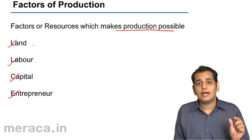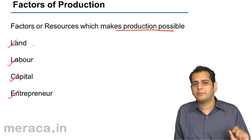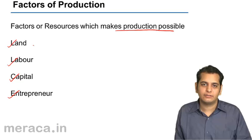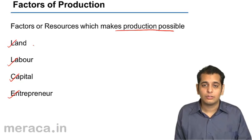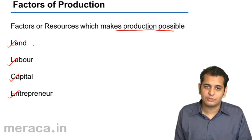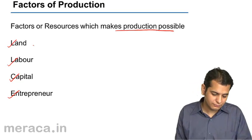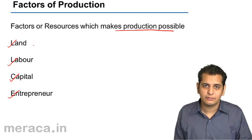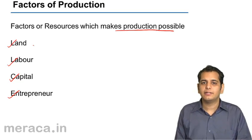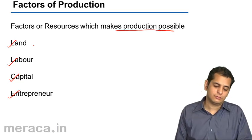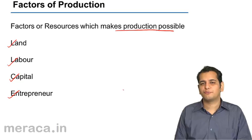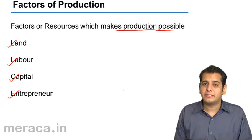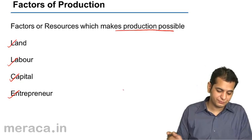Capital is that factor of production — that element which helps the entrepreneur to buy the other factors of production and to give the other factors of production their remuneration. So capital is the monetary factor of production, which helps the entrepreneur to pay remuneration to the other factors of production.